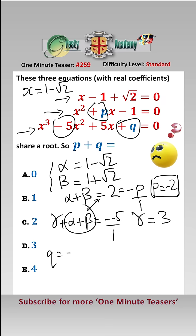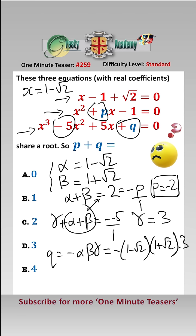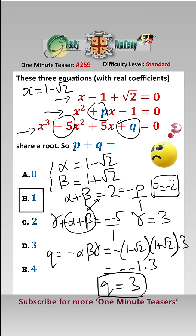All we need to do now is note that q is equal to minus alpha·beta·gamma, which is equal to minus (1 minus root 2)(1 plus root 2) times 3, which equals minus (minus 1) times 3, which equals 3. So q is 3 and p is minus 2, meaning p plus q is 1, and the answer is B.